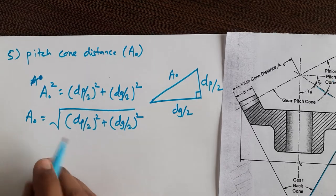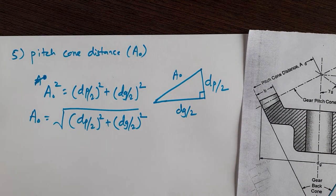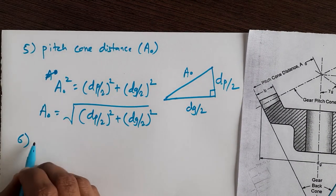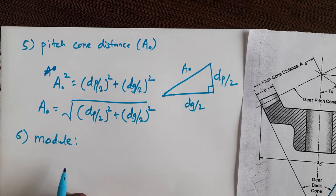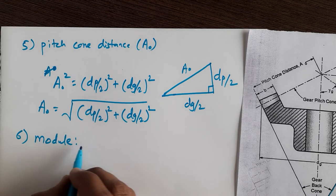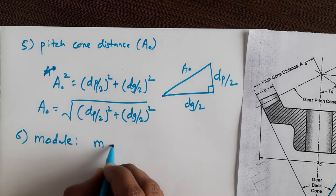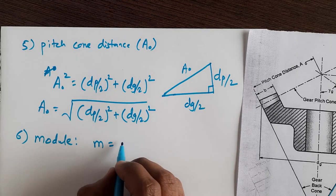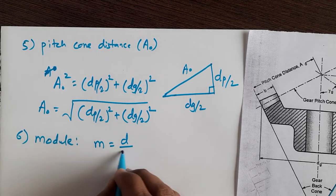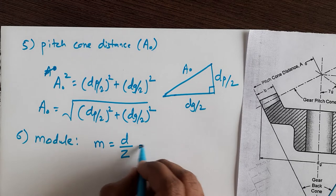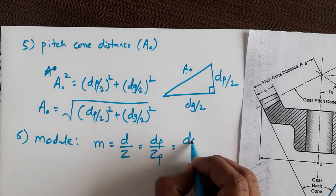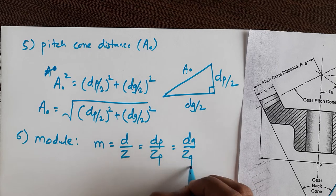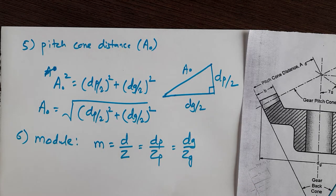In this way you can find A0. The next terminology is module. Module is nothing but the pitch circle diameter in mm at the large end of the teeth divided by the number of teeth. So module equals d divided by z, which may be dp by zp or dg by zg.